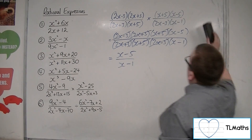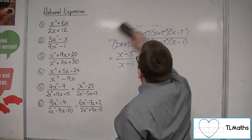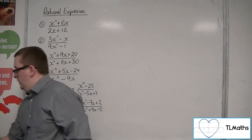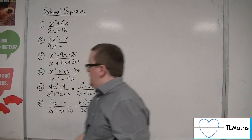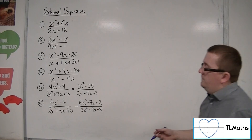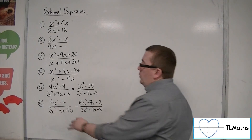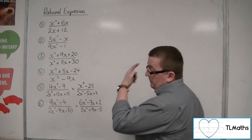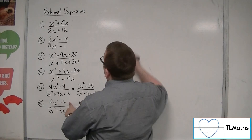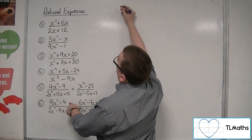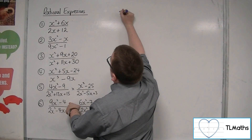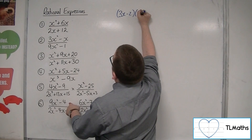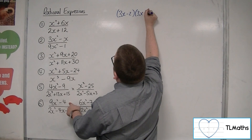So finally, let's have a look at number 6. A similar idea — I want to factorise all four pieces. First of all, 9x squared minus 4 is the difference of two squares, so that's 3x minus 2 times 3x plus 2.